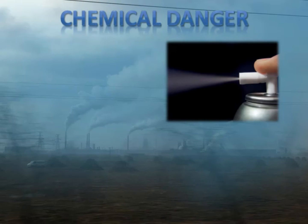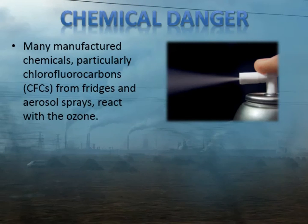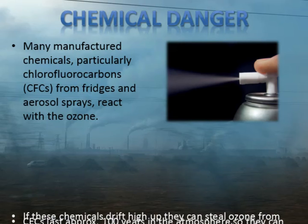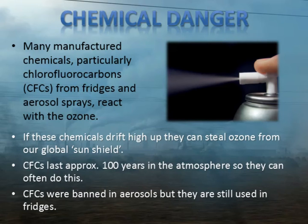So what is all the fuss about chemicals and the ozone layer? Well, many manufactured chemicals — especially CFCs, which are used in fridges and aerosol sprays — react with ozone, or at least they can react with ozone in the right conditions, perhaps with sunlight or extra energy added. If these chemicals get into the atmosphere and drift up to the stratosphere, they can react there and steal ozone from our sunshield. CFCs in particular have a very long lifetime in the atmosphere — they don't react easily, so they are often able to float up high in this time.